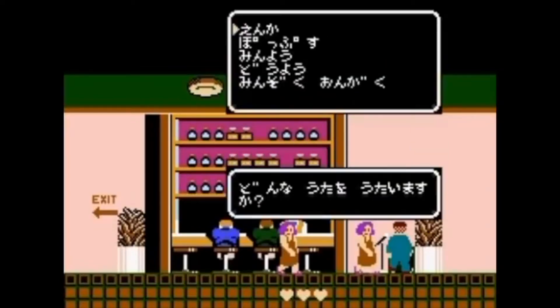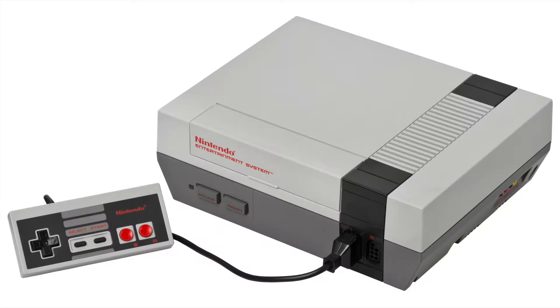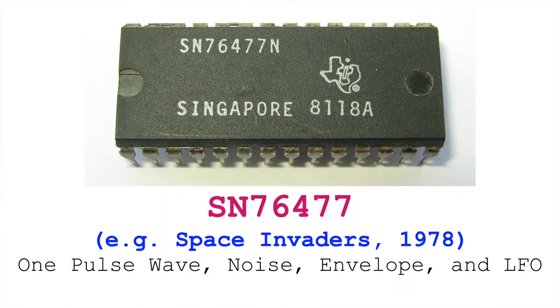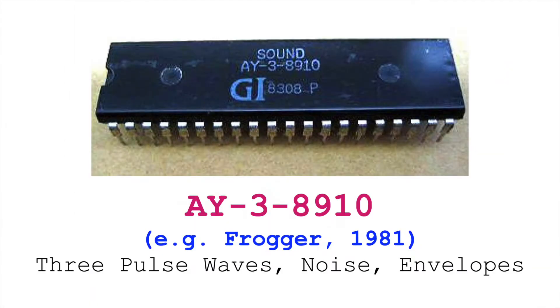For now, let's set that aside and talk about the North American NES and its five sound channels. We talked previously about PSGs and the limited number of voices they were able to create at the same time, with some systems only able to create one, two, or three voices. The NES has five sound channels.